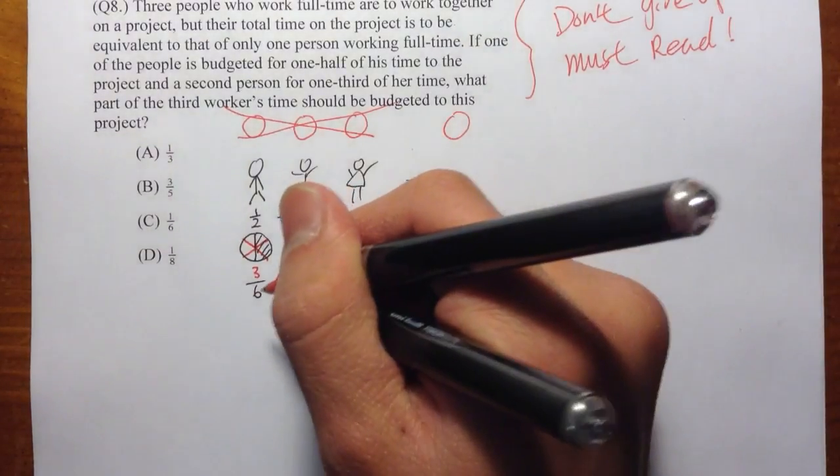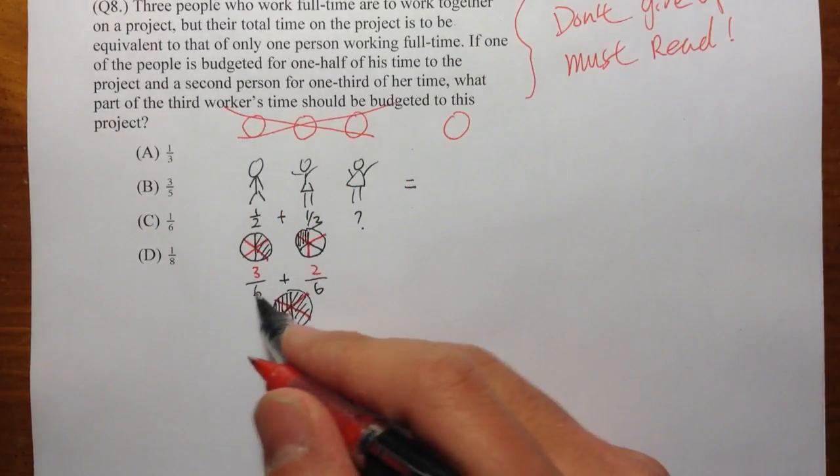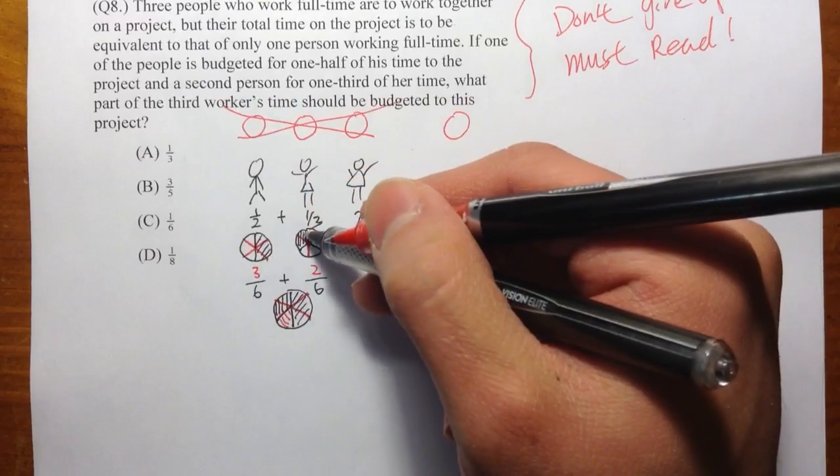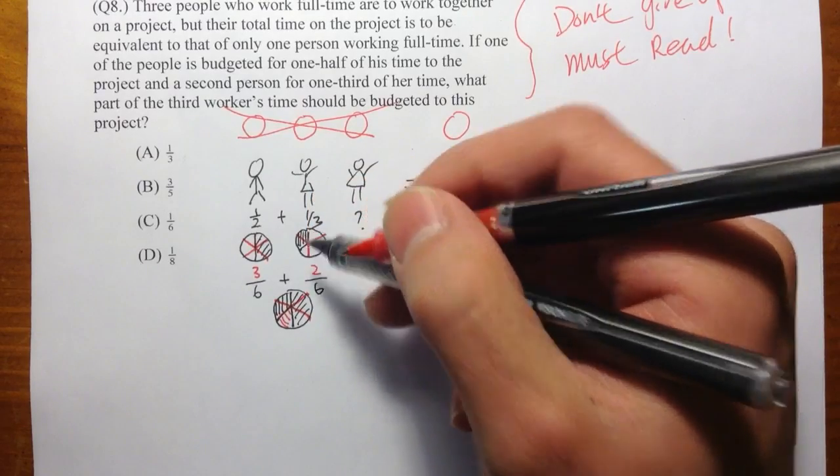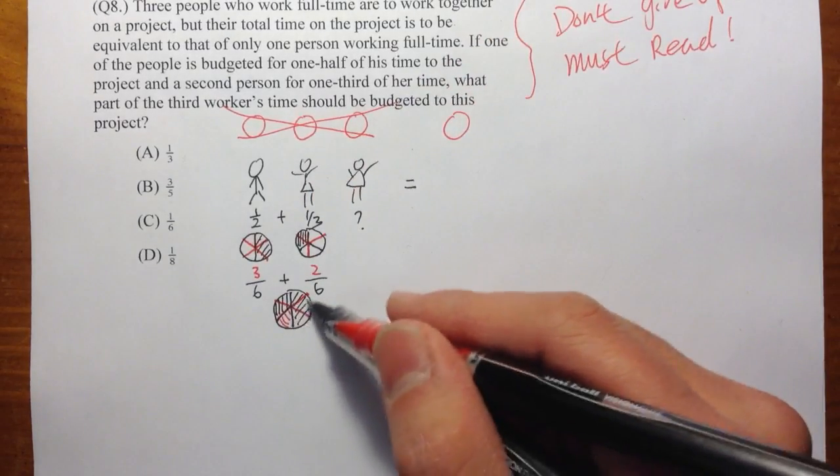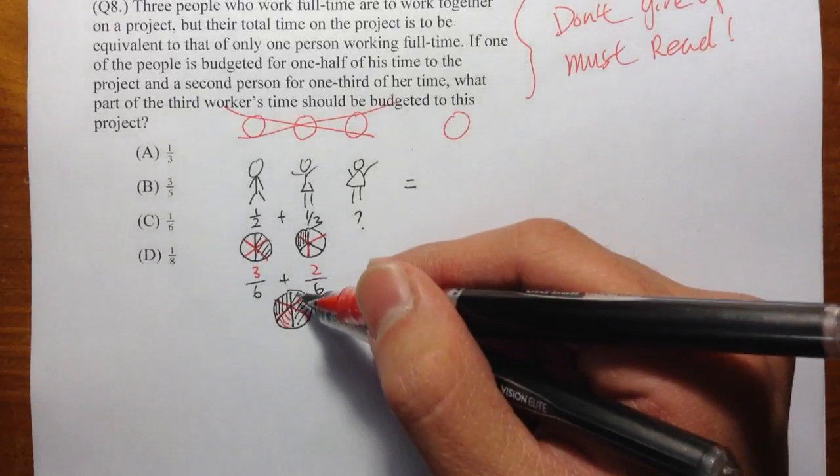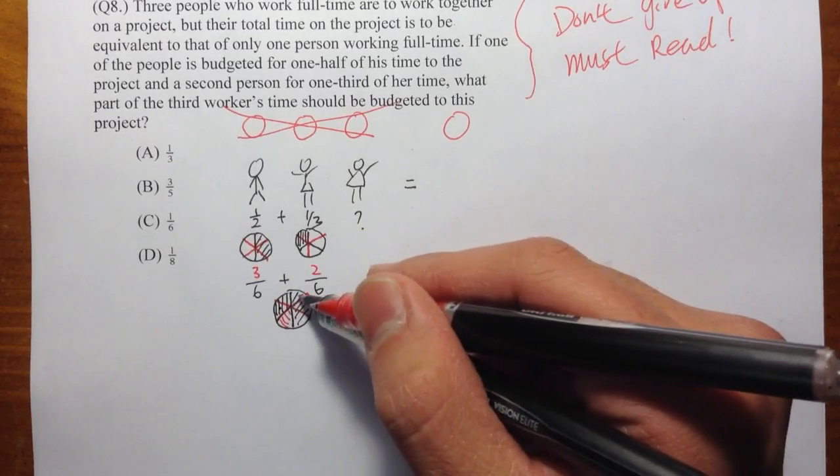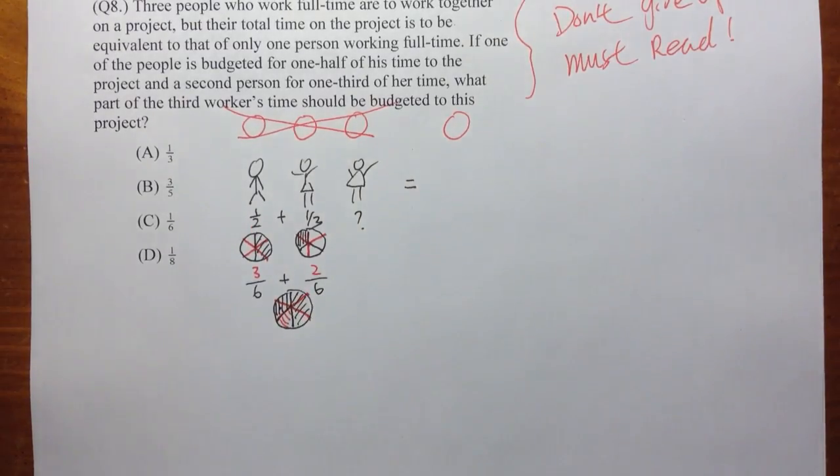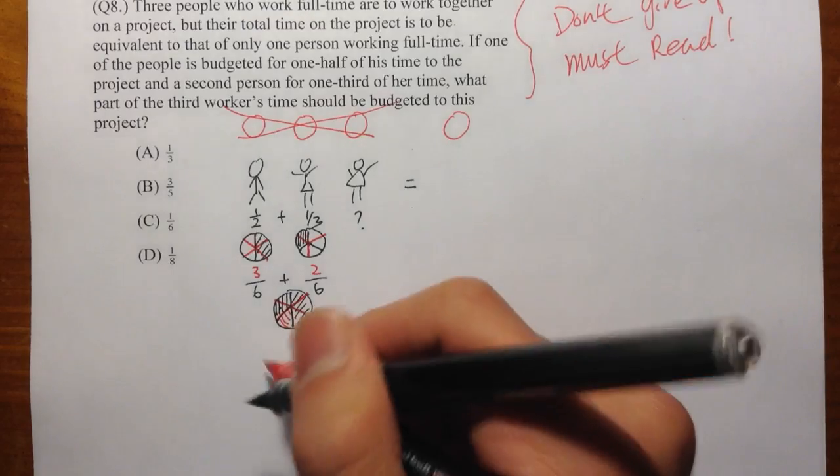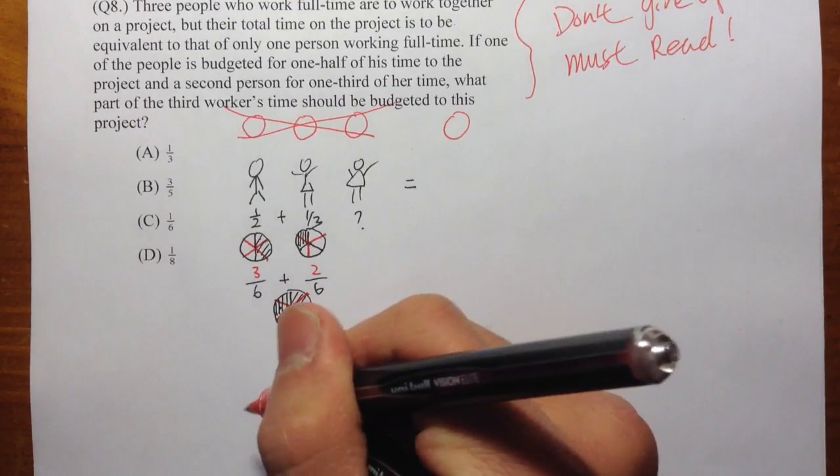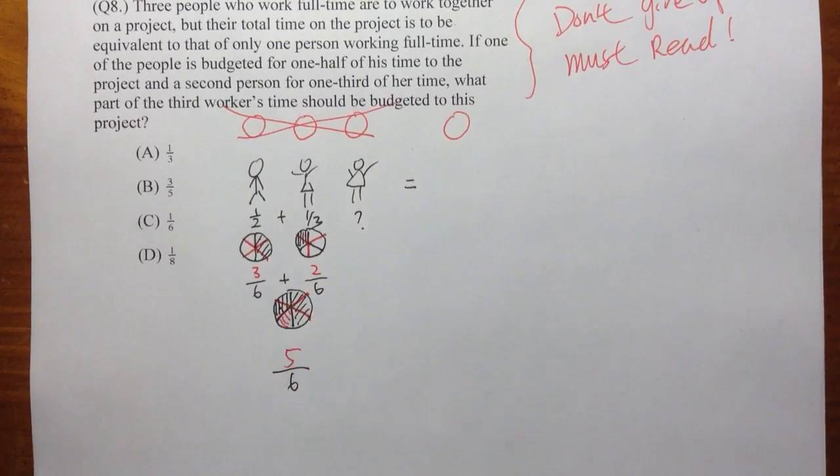And then altogether, when you add, because this piece now it's the same as that piece, right? So altogether, as you can see from this picture, they already took one, two, three, four, five. They already took five over six of the entire pizza.